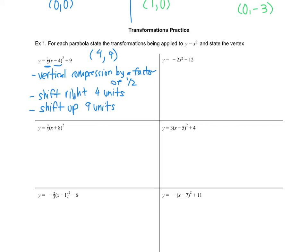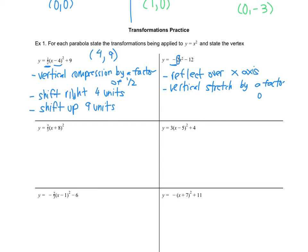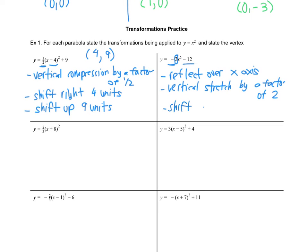For the next one, we have a negative, so reflect over the x-axis. The a value is 2, ignoring the negative, and 2 is greater than 1, so vertical stretch by a factor of 2. The negative 12 is outside the bracket, past the exponent of 2, so it's up-down: shift down 12 units. There's no right-left movement, so the vertex is 0, negative 12.